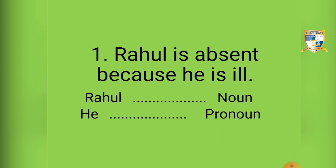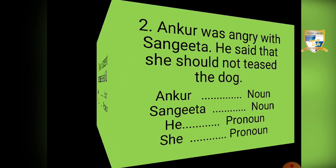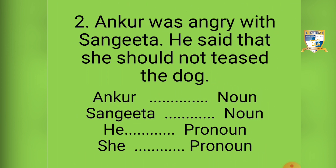Let's look at another example: 'Ankur was angry with Sangeeta. He said that she should not tease the dog.' In this sentence, 'he' stands for Ankur and 'she' stands for Sangeeta. The words Ankur and Sangeeta are nouns, therefore the words 'he' and 'she' are pronouns.